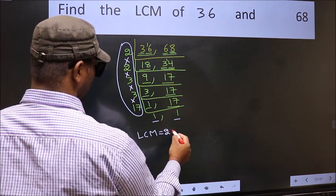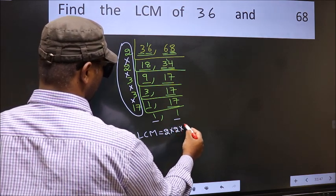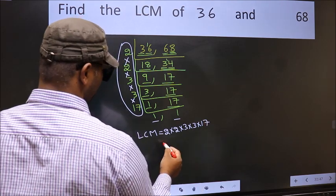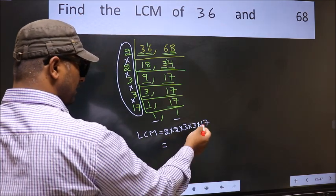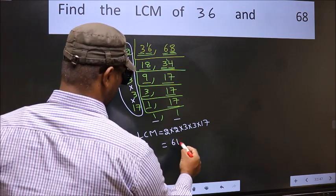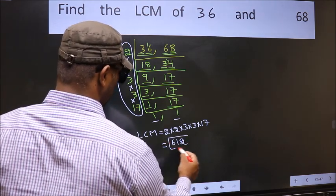That is 2 into 2 into 3 into 3 into 17. When we multiply these numbers, we get 612 is our LCM.